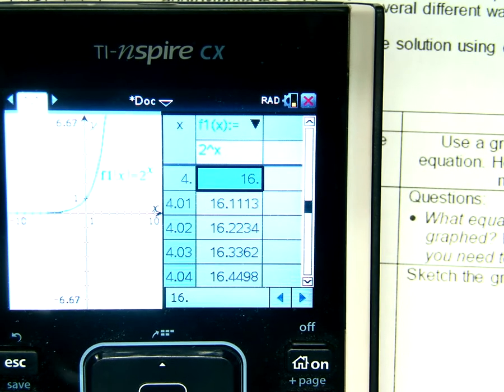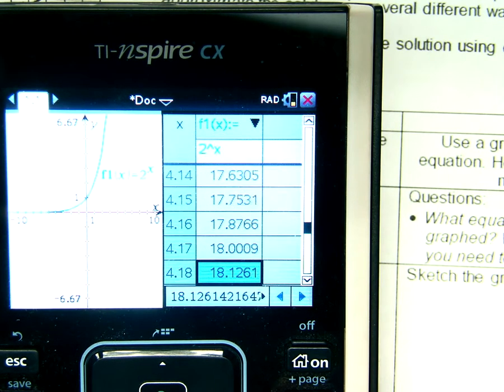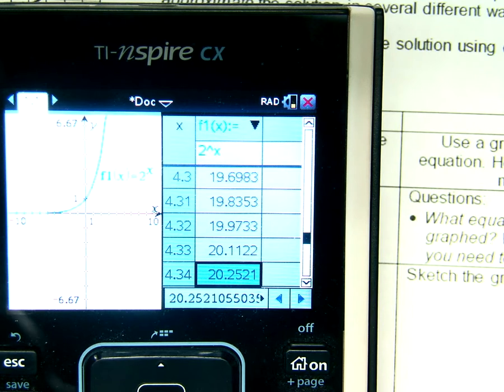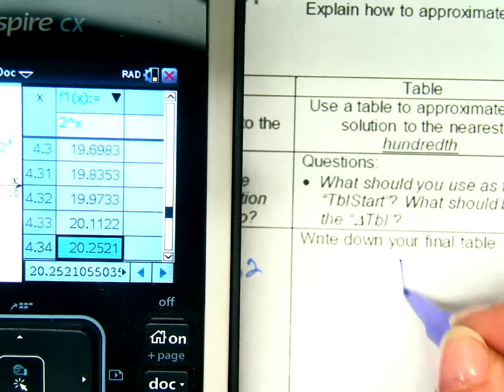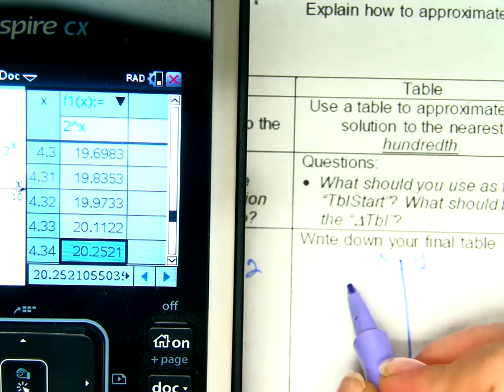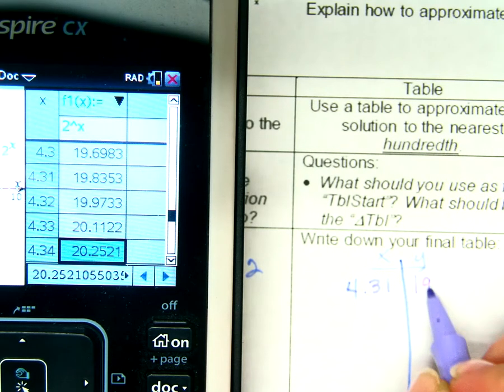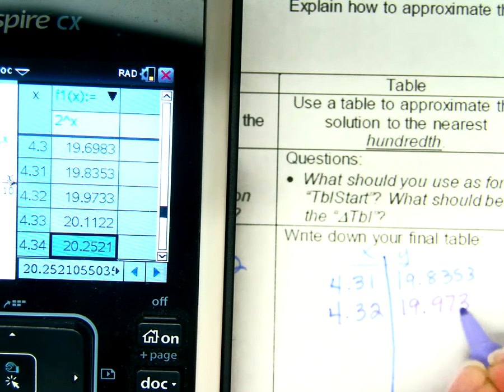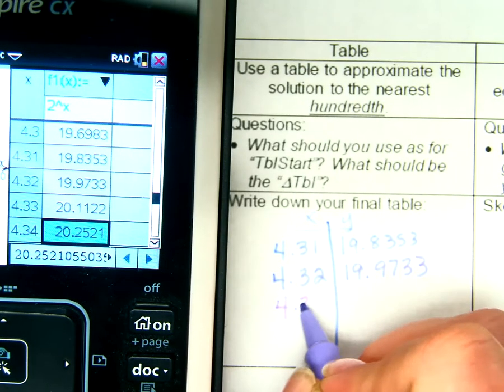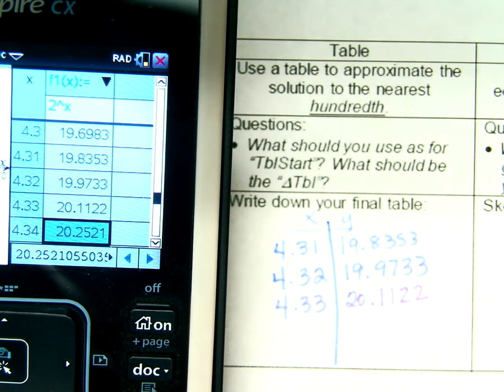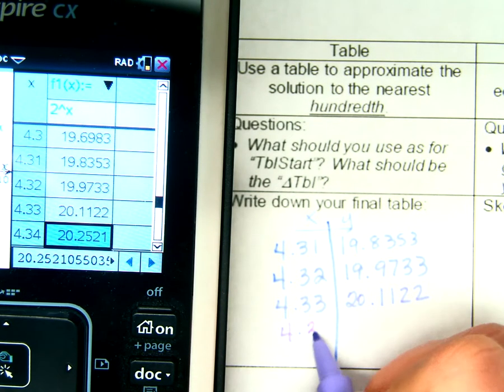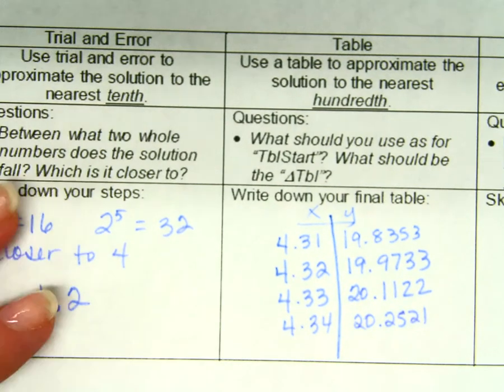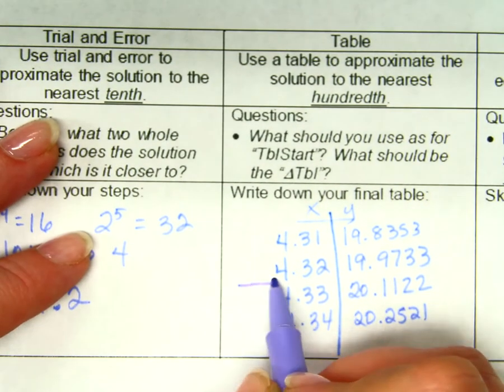Now, can I find 20? Okay. Let's go find 20 in my Y column. Uh oh. Did you find 20? Neither did I. Alright, let's write down our final table, X and Y. If X was 4.31, I got 19.8353. If X is 4.32, I got 19.9733. That's pretty close, right? But then 4.33 was what? 20.1122. So, that's too much. Let's go ahead and write one more just for good luck. So, I have a better idea of what my answer is, but do I know my answer yet? No, I know my answer should be right in between those two X values, right?